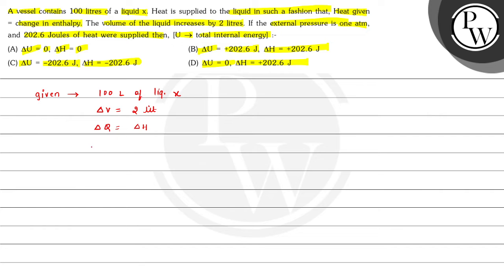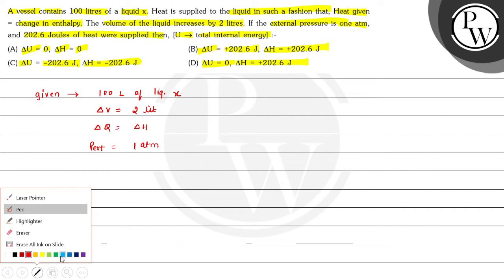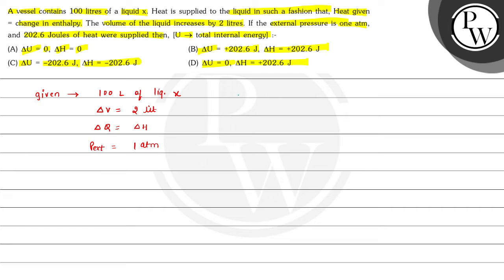External pressure is also given: P_external = 1 atm. Now firstly we will calculate the value of W. W = -P ΔV, where ΔV is the change in volume, equal to 2 liters. So we can write W = -1 × 2.